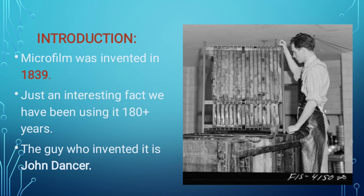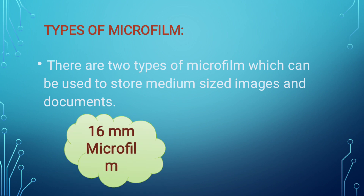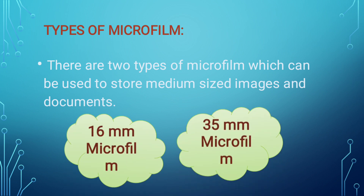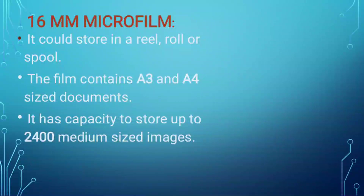After knowing the introduction of microfilm, we discuss the types of microfilms. There are many types, but here we discuss only two: the first is 16mm microfilm and the second is 35mm microfilm. The 16mm microfilm can be stored in a reel, roll, or scroll.